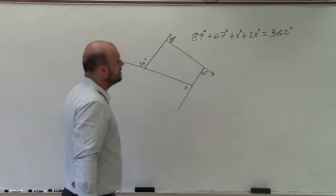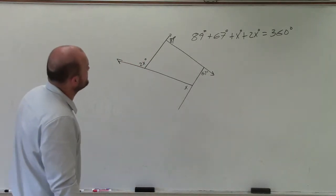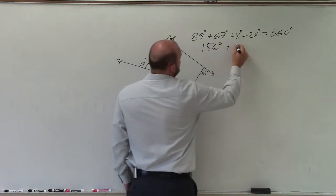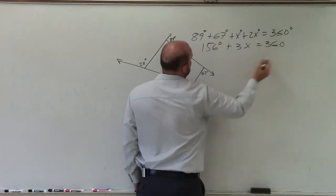Now I just add 89 plus 67, which is going to give me 156 plus 3x equals 360.